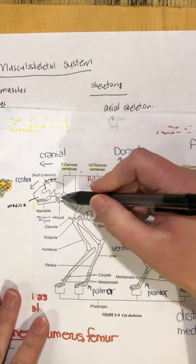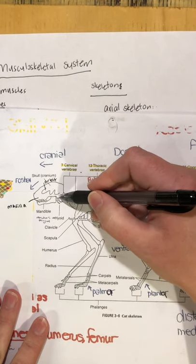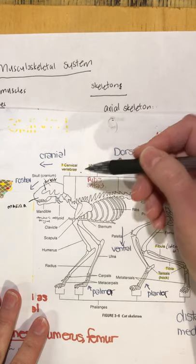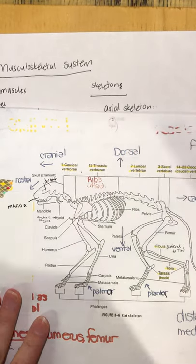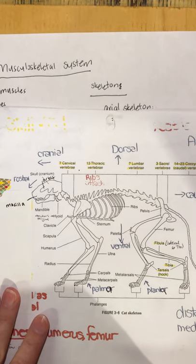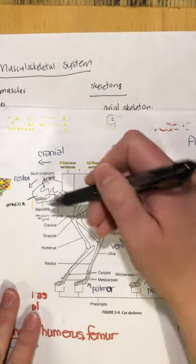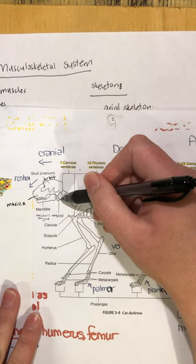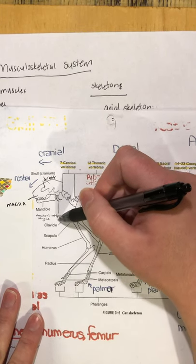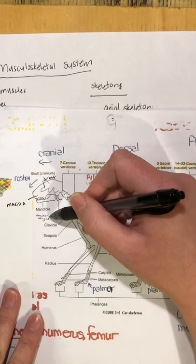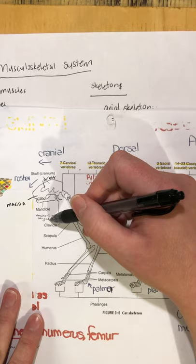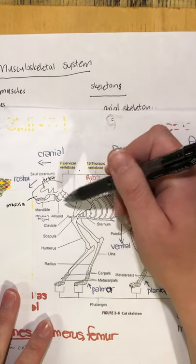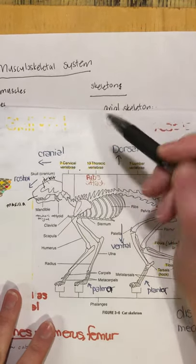A little further back we have the hyoid bones — I don't think that's included on the diagram I gave you, but if you want to draw it in you certainly can. The hyoid bone is what anchors the tongue — it's the bone the tongue is attached to.